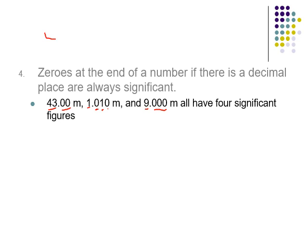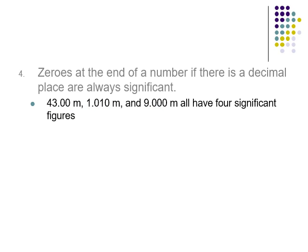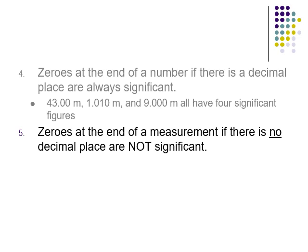Why do we worry about this? What's the difference between 43.00 and 43? Remember, the last significant digit is the estimate. By writing 43.00, we're saying the hundredths place is our estimate — we are certain it's 43 meters, certain it's 43.0 meters, and we're estimating that hundredths place. If I just say 43 meters, the 3 is our estimate, so it could be 42.5 or 44 — we don't know because that last digit is the estimate.